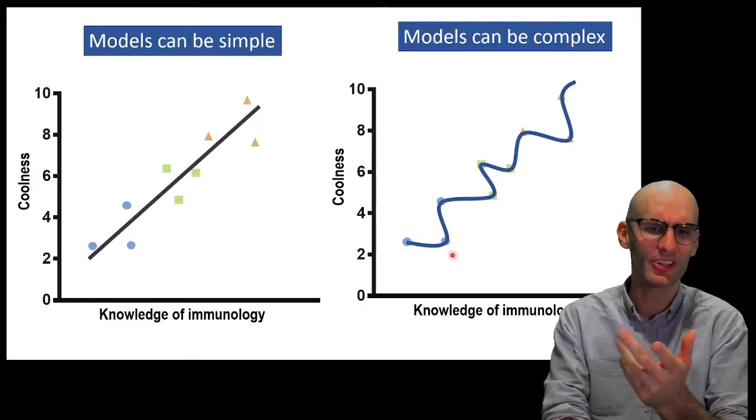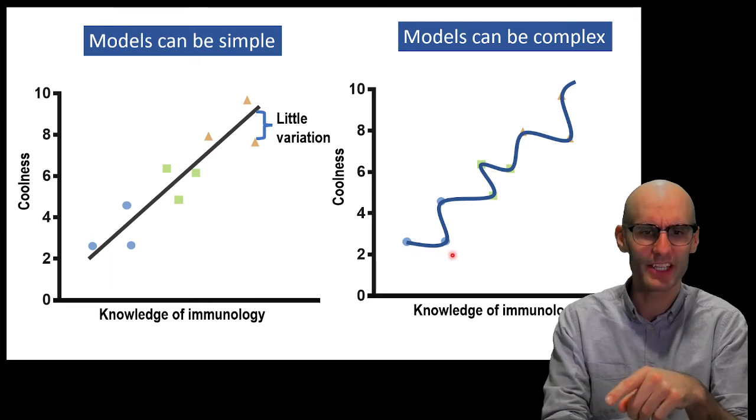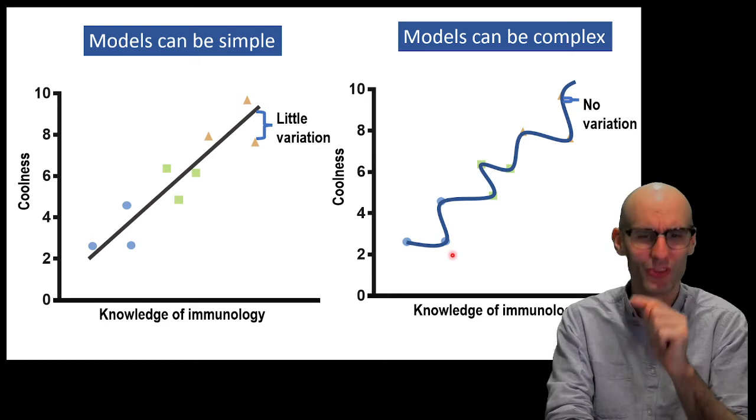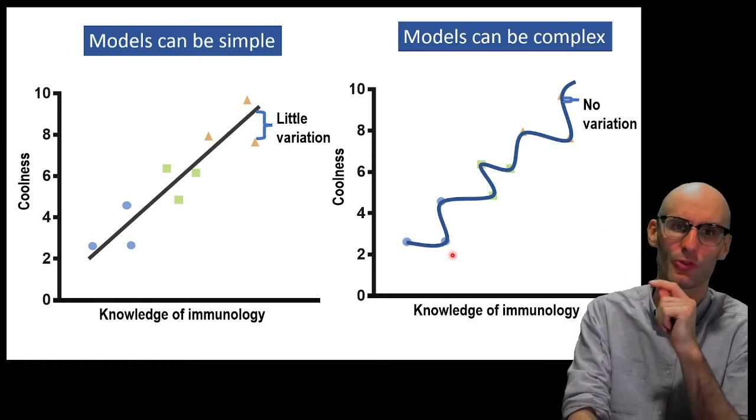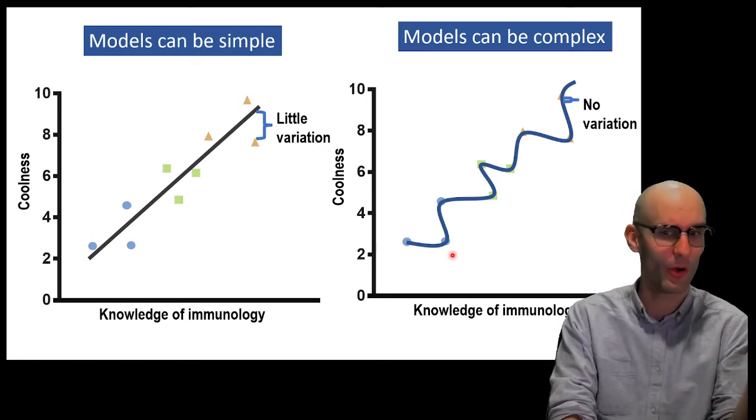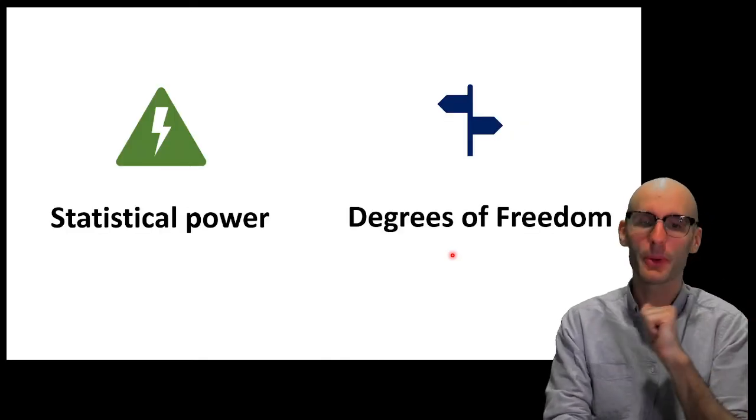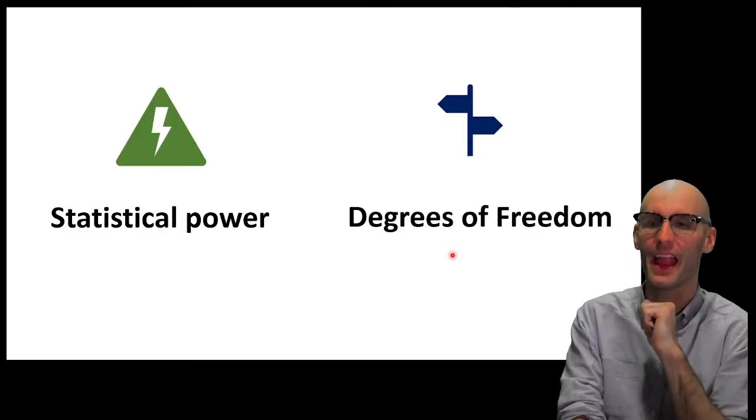But if we go back and look at this, don't we have little variation over here? And we have no variation over there. Because we've managed to build a statistical model so complex that it managed to go exactly through all the data points. What's wrong with that? Is it an explained variation? Good.